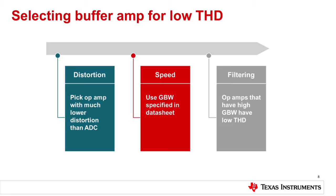Because by the time you gain up or have a multi-stage topology, you're going to lose a lot of usable bandwidth. Make sure to use the gain bandwidth product specified in the data sheet. When it comes to filtering, use op-amps that have high gain bandwidth product — high usable bandwidth — which will give you low distortion. You can always filter at the end of the day to narrow your band and get the most out of noise performance.